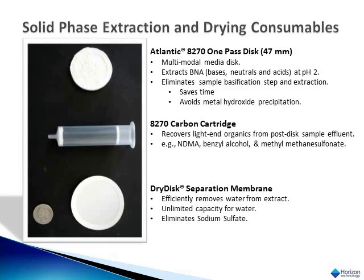The Atlantic 8270 one-pass disc, shown at the top, is a 47-millimeter multimodal media disc. It contains proprietary HLB (hydrophilic-lipophilic-balanced) resin plus ion exchange sites for organic bases. The sample is acidified to pH 2 and passed through the disc only once to waste — no basification is done, as the ion exchange sites capture organic bases in their ionic form. This saves time and eliminates metal hydroxide precipitation, which can slow sample flow through the disc. The 8270 carbon cartridge is placed on the effluent side of the disc and covers poorly retained light-end organics like NDMA, benzyl alcohol, and methylmethane sulfonate.